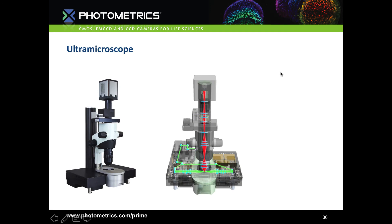The ultramicroscope is typically used for very large and optically cleared samples. The detection objective is a 2x providing cellular resolution, with an 18mm field of view and up to 10mm working distance, making it perfect for larger samples. The lightsheet is formed and split to illuminate the sample from both left and right, and further split into three lightsheets per side. Choosing dual view gives you six lightsheets total, providing fantastic resolution through large optically dense samples.